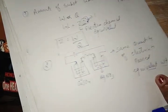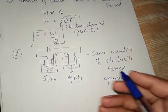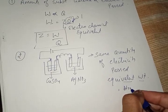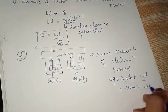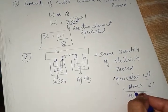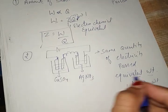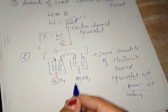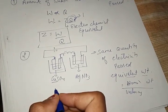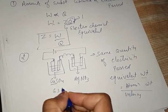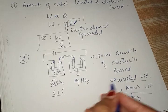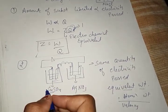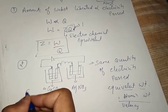The equivalent weight is atomic weight divided by valency — the number of electrons lost or gained. For copper sulfate, copper has an atomic weight of 63.5. The amount of copper deposited divided by the amount of silver deposited equals the proportion of their equivalent weights.